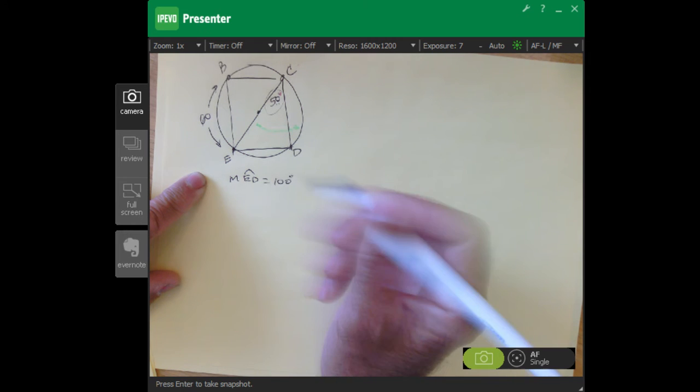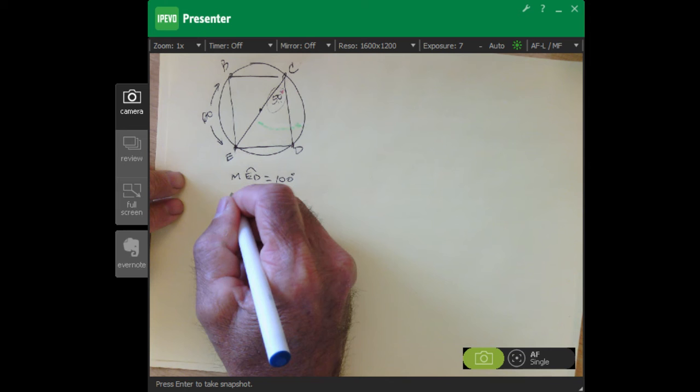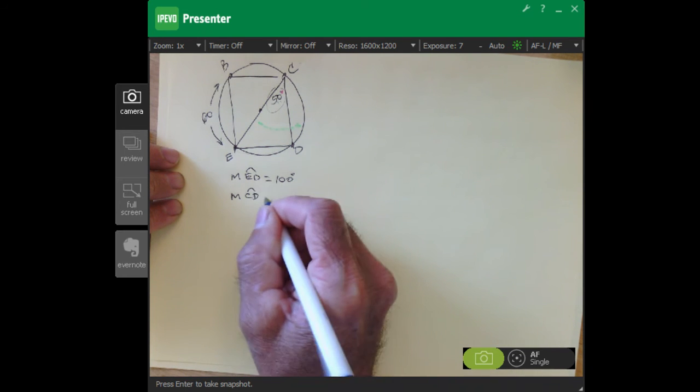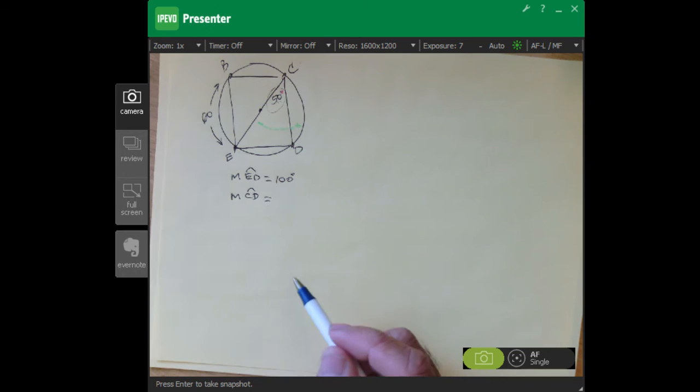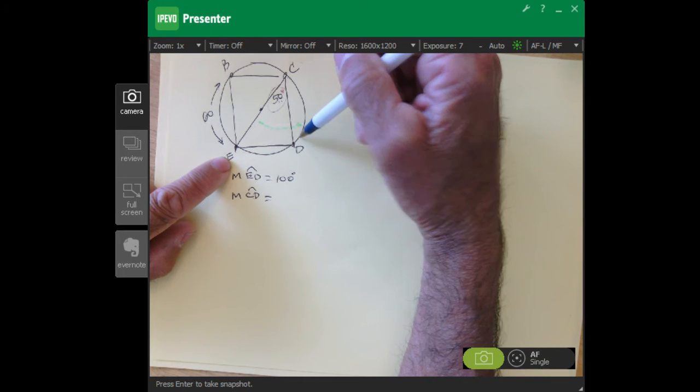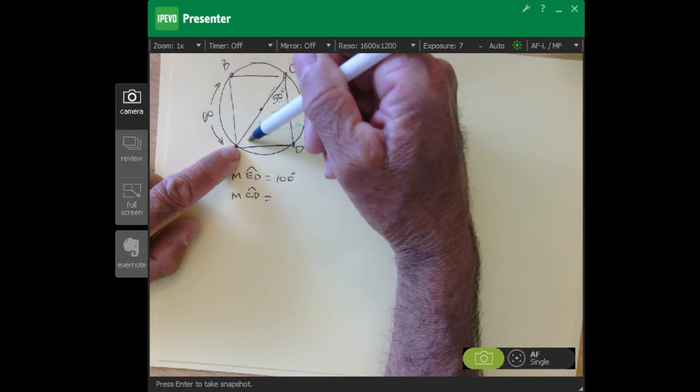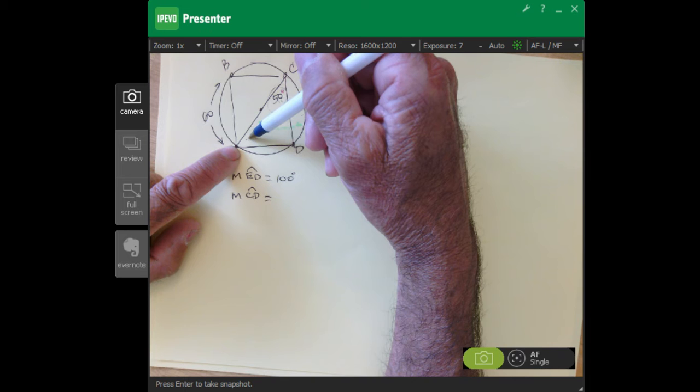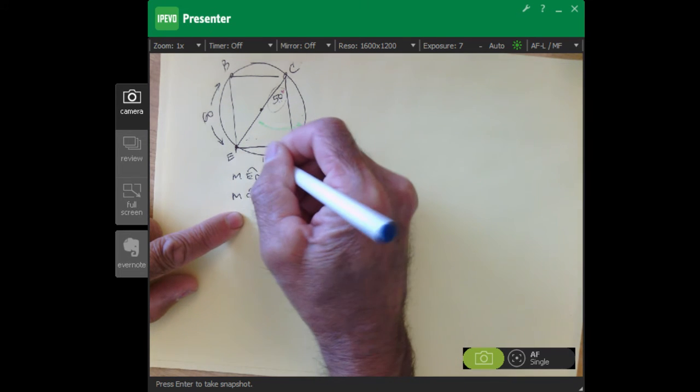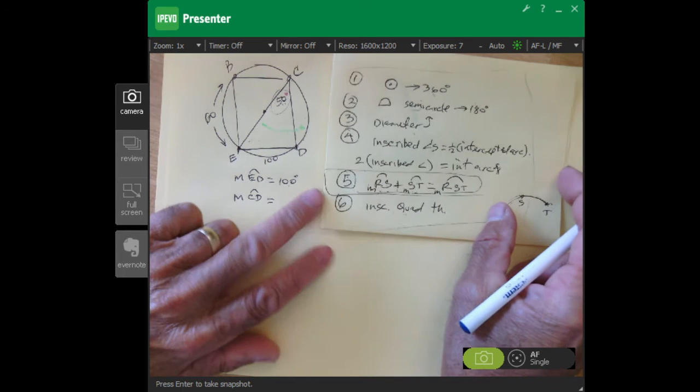For the second one, to find the measure of arc CD, that one was more complex because we didn't have an angle measure that was directly associated with it. This is the angle that cuts off that arc and we don't know this angle measure. Let me stop for a moment - remember these are the things that we talked about in the last video that you want to keep in mind.